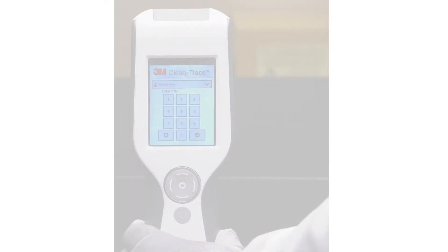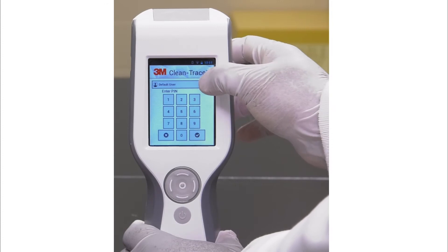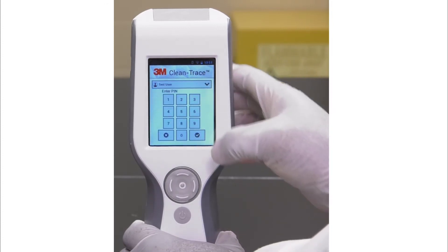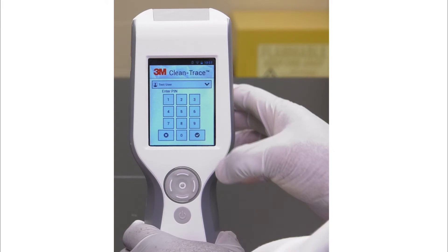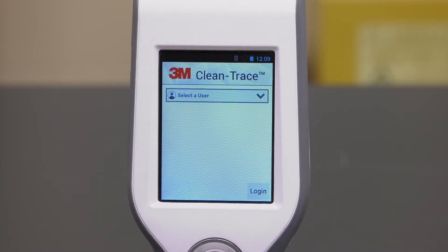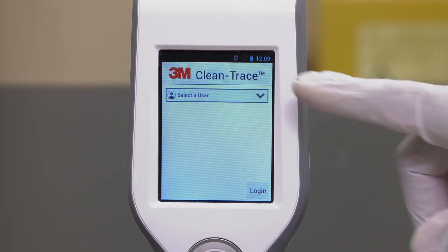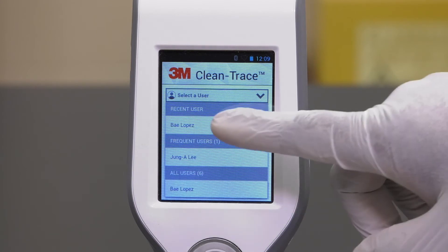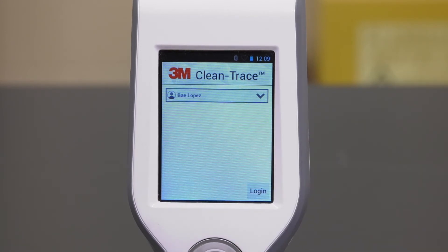When you get to the login page, select the default user if your username is not showing up in the list of users. Then tap Login to log in. If your username was already set up through the 3M Clean Trace Hygiene Management software, you can select your username by tapping Select User and then tapping your username. In this case, Bay Lopez.